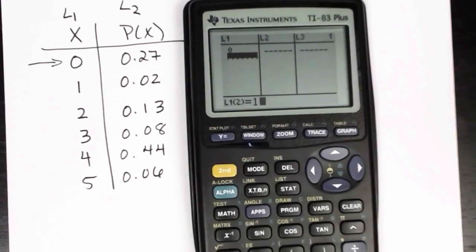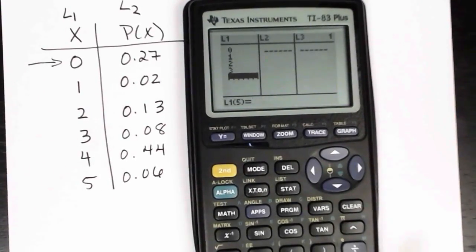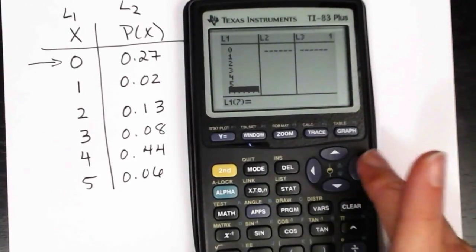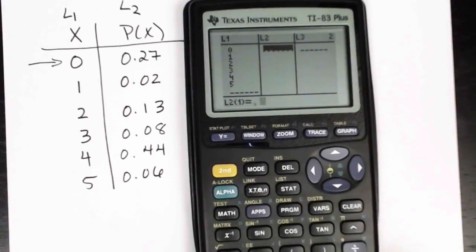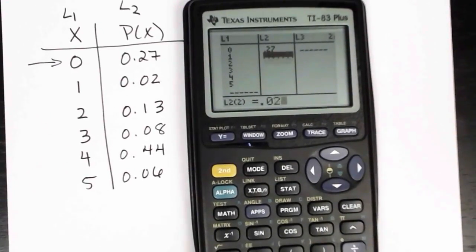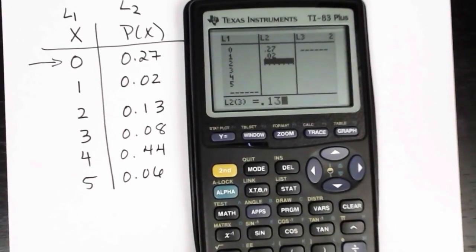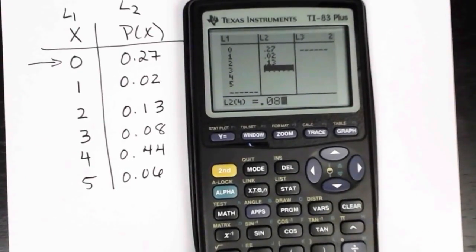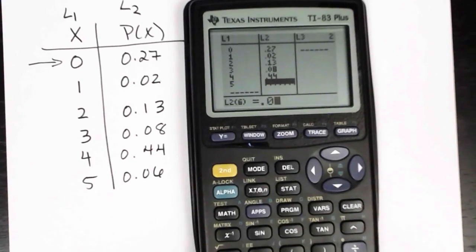So 0, 1, 2, 3, 4, 5 in list one. And then 0.27, 0.02, 0.13, 0.08, 0.44, and 0.06 in the second list.